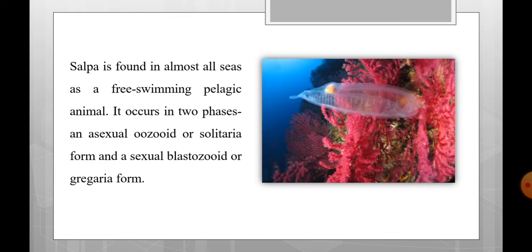SALPA is found in almost all seas as a free-swimming pelagic animal. It occurs in two phases: an asexual ozoid or solitaria form and a sexual blastozoid or gregaria form. SALPA is cosmopolitan, found in seas and is free-swimming.